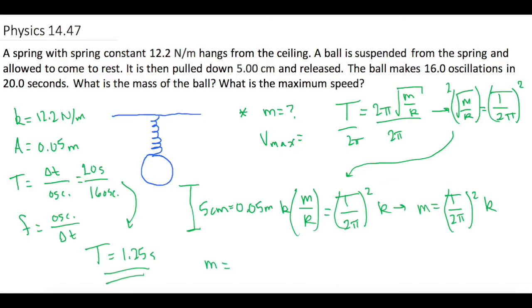So then when we plug it in, t we solved for is 1.25 seconds divided by 2 pi squared times the spring constant of 12.2 newtons per meter. That gives us a mass of 0.483 kilograms, which is also 483 grams. Both of these are correct, and since they let you put in the units, you can put in whatever one you want. They changed mine from kilograms to grams, but both are correct.